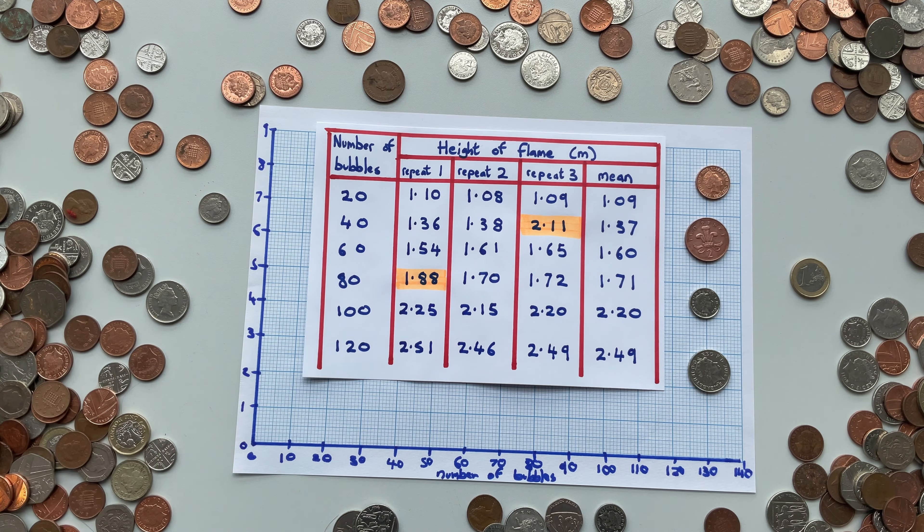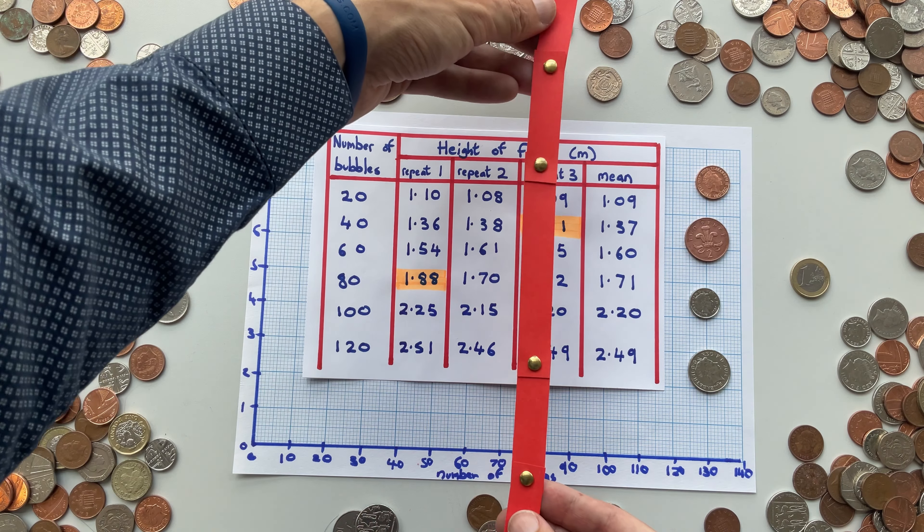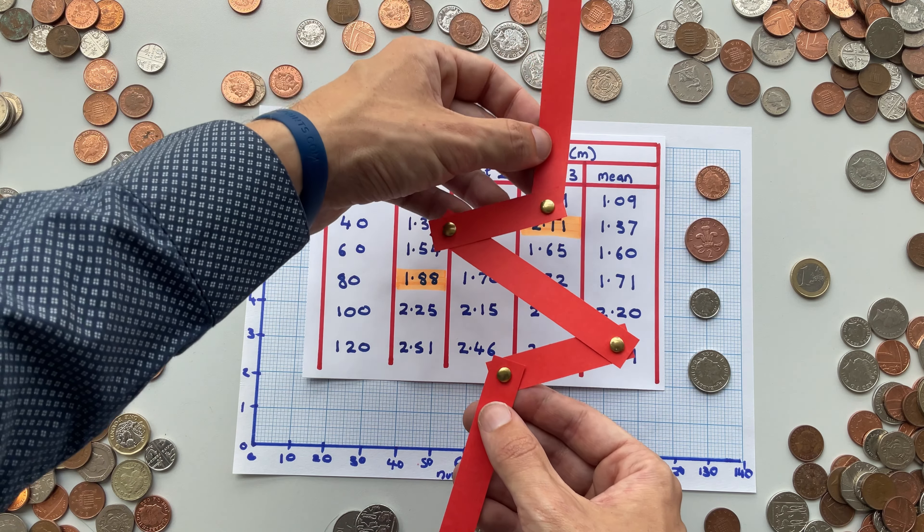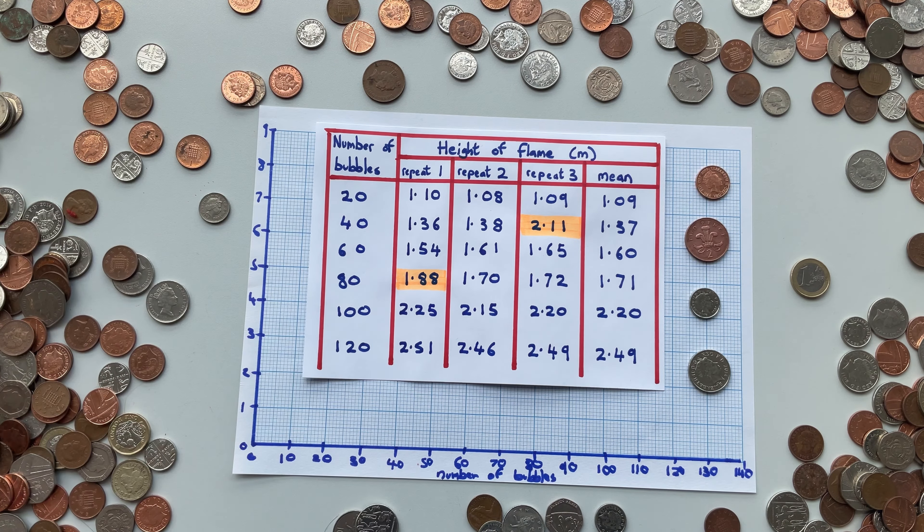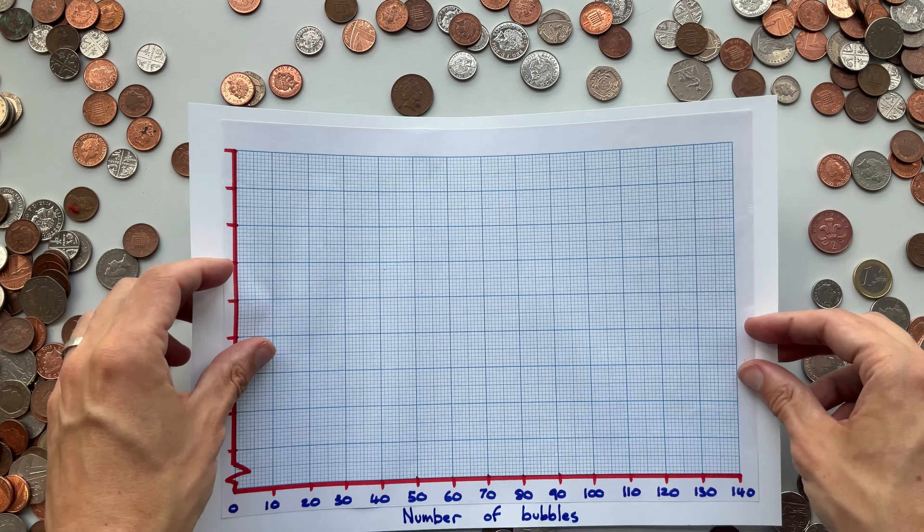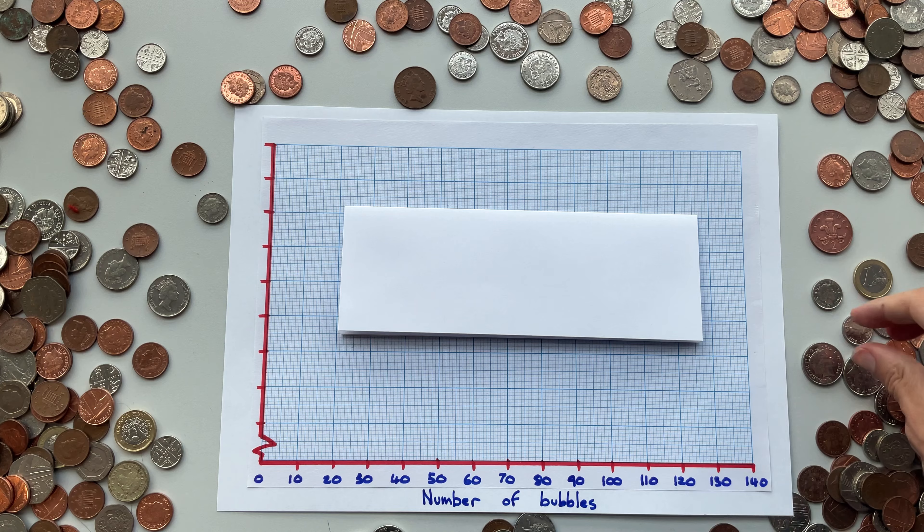The first trick is to use an axis break. What we do is we take the axis and we squish it down like this. And that lets us start at whatever number we like and go up in whatever scale we like. In this example, 1.09 is the lowest value, so we'll start just below that at one.